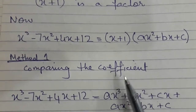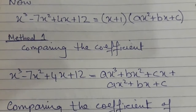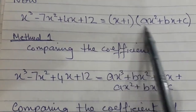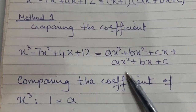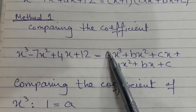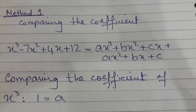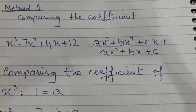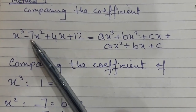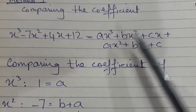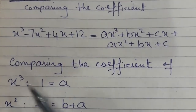In the comparing the coefficient method, we expand the bracket and compare coefficients of like terms, since this is an identity. Comparing the coefficient of x cubed: 1 equals a, so a = 1. Now comparing the coefficient of x squared: the coefficient here is minus 7, and on the other side it is b + a. Plugging in a = 1 gives us the value of b.